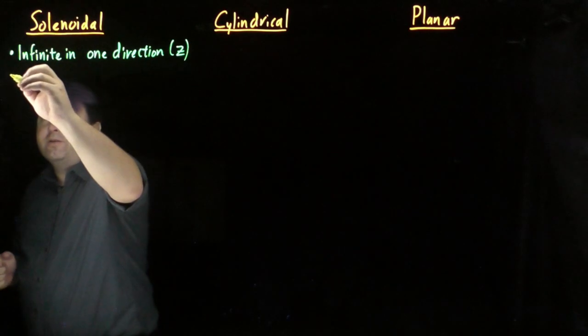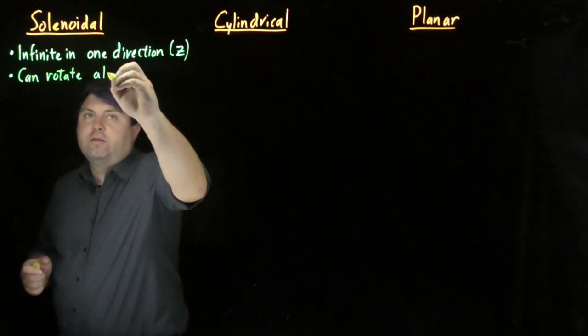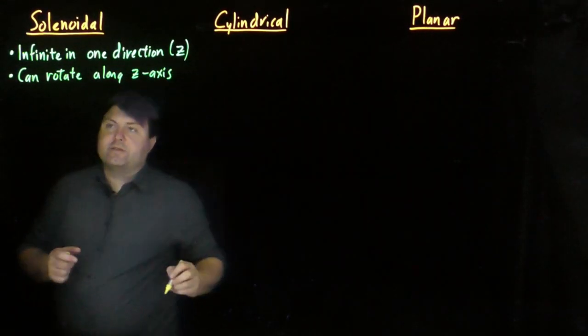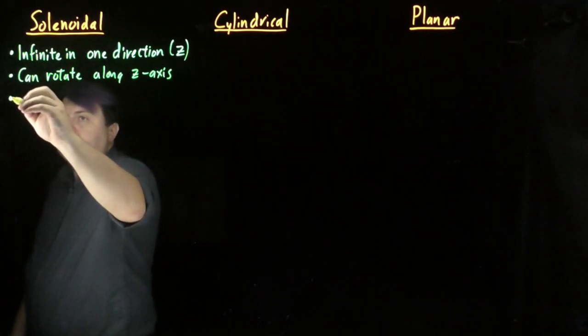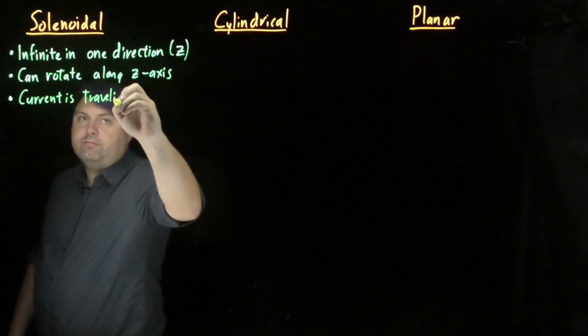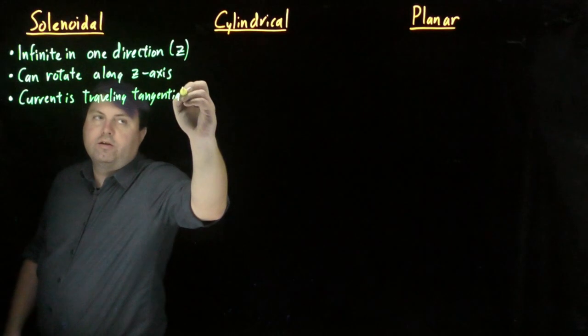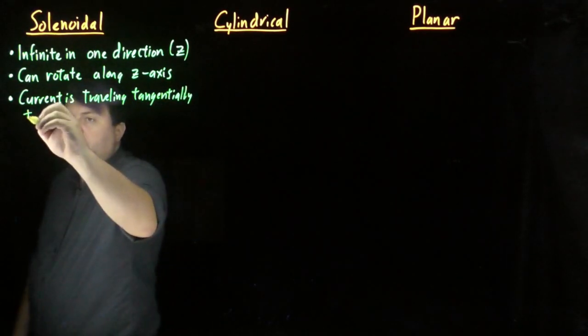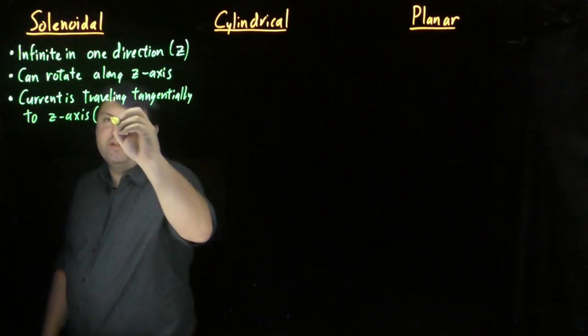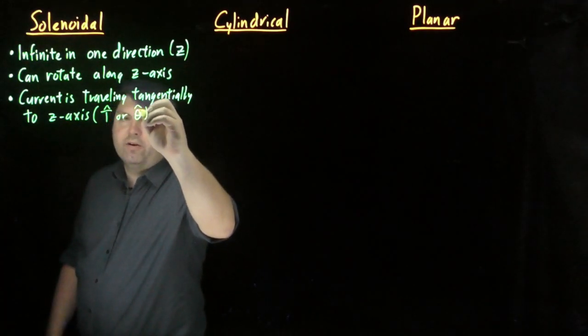And so with our solenoids, we can rotate along our z axis. But for our solenoids, our current is traveling tangentially to the z axis. And the tangential would be then t hat, or if you prefer, theta hat.